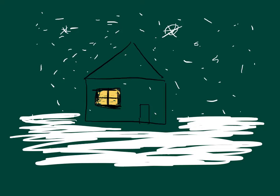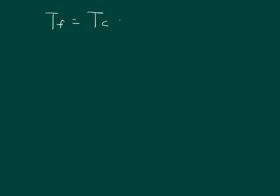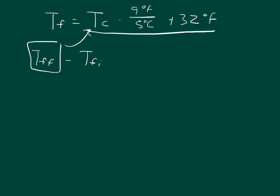This is really quite simple. We just use the conversion from Celsius to Fahrenheit that we've been using. The temperature in Fahrenheit equals the temperature in Celsius times 9°F over 5°C, plus 32°F. So we can say the temperature in Fahrenheit final minus the temperature in Fahrenheit initial — the temperature in Fahrenheit final equals this expression of Celsius final, and the temperature in Fahrenheit initial equals this expression in Celsius initial.